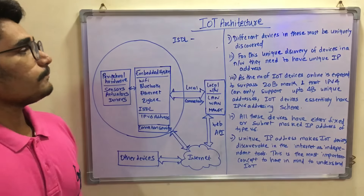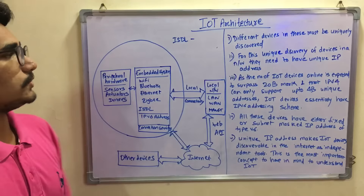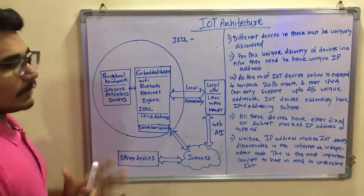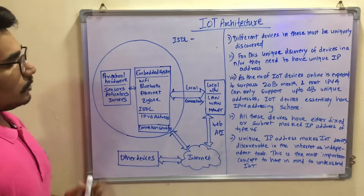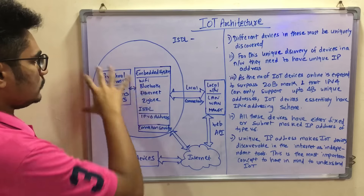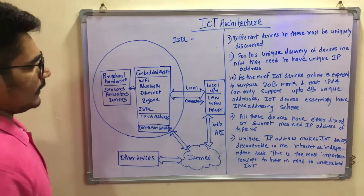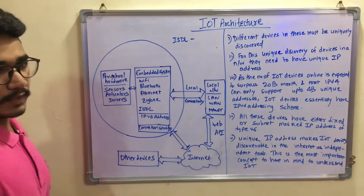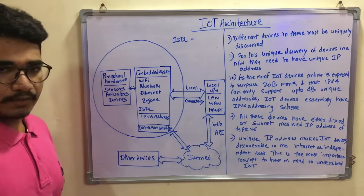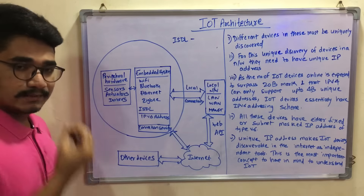So let's begin. We have this IoT architecture block diagram. The first part consists of two blocks shown in this circle. The very first one is the peripheral hardware.